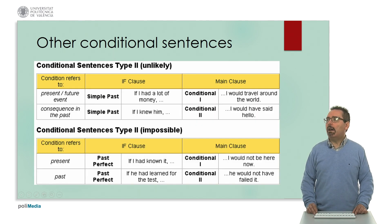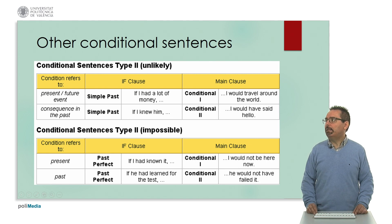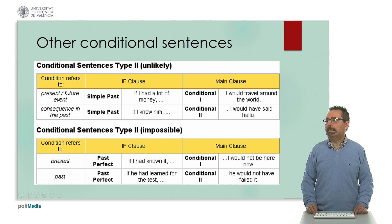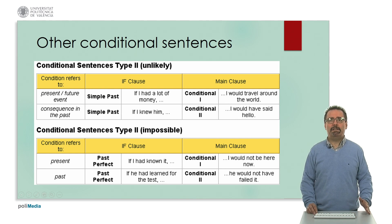Here are more complex possibilities. For example, the condition can refer to a present or future event, or to a consequence in the past — in both cases we use the simple past: 'If I had a lot of money, I would travel around the world' or 'If I knew him, I would have said hello.' Then we have conditions referring to the present or the past — in this case we use past perfect in both: 'If I had known it, I would not be here now' or 'If he had learned for the test, he would not have failed it.' Depending on the situation and meaning, we can use different verb tenses or forms.